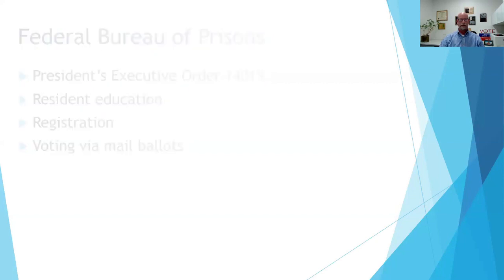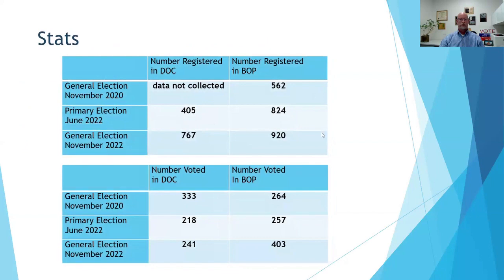Some quick statistics from the last election: In the 2022 general election, we had 767 people registered in the jail, out of around 1,300 residents — a very good registration rate. In the Bureau of Prisons, we have about 3,200 residents with 920 registered. As for votes collected, we had 241 in the D.C. jail and 403 scattered across the country in the Federal Bureau of Prisons.